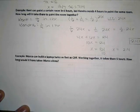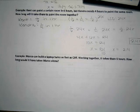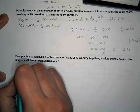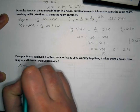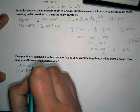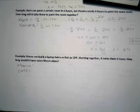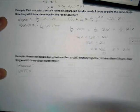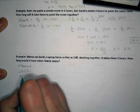So I wanted to give you guys some strategies for how you could think of this problem so that when you do it, it would make sense. The problem says Marco can build a laptop twice as fast as Cliff. So we have Marco and Cliff.